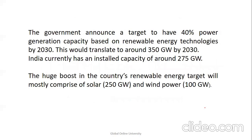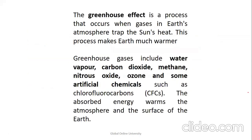India announced 40% power generation capacity from renewable energy by 2030, targeting 500 gigawatts by 2030. India has a currently installed capacity of 275 gigawatts. The boost will majorly comprise solar energy — contributing 250 gigawatts — and wind power contributing 100 gigawatts.